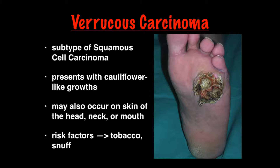Verrucous carcinoma is a subtype of squamous cell carcinoma, a cancer of the skin. This cancer presents with cauliflower-like growths that look like a giant wart. This lesion may also occur on the skin of the head, neck, or mouth area. Two major risk factors for developing this cancer include tobacco and snuff.